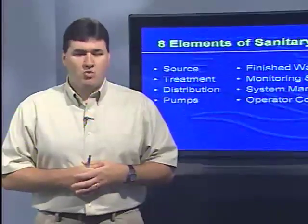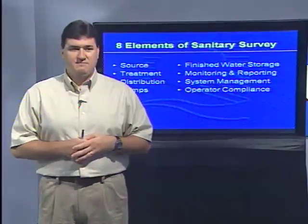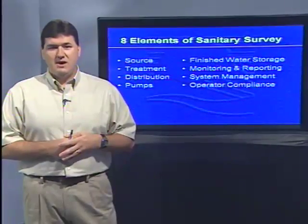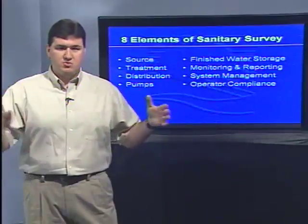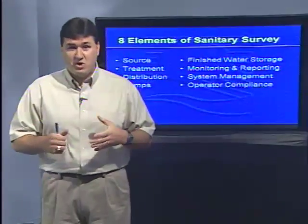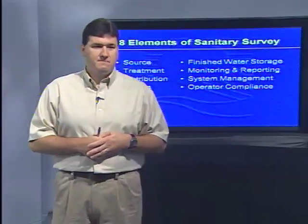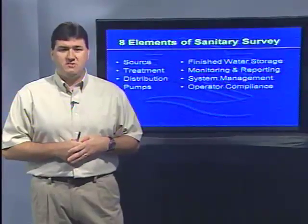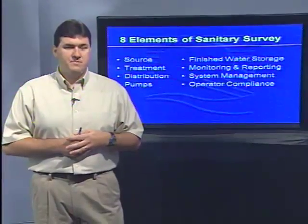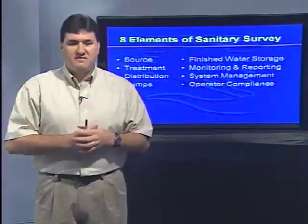The eight elements of a sanitary survey are the same elements we've been using historically. The first is source — we're going to look at your well, the sealing block, well casing, screening vent, and nearby receptors to ensure there are no potential sources of contamination. We'll look at your treatment process — whether simple chlorine injection or a more sophisticated process. We'll evaluate your distribution system, taking pressure readings and looking for leaks. We'll look at your pumps for leaks and adequate capacity.